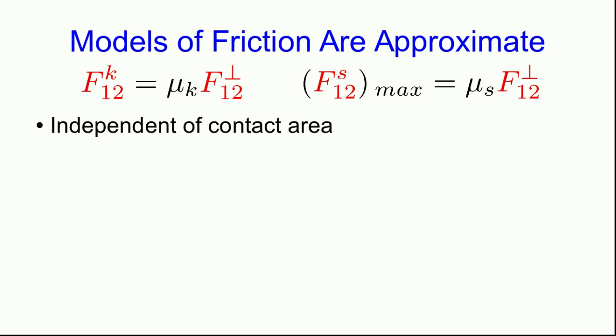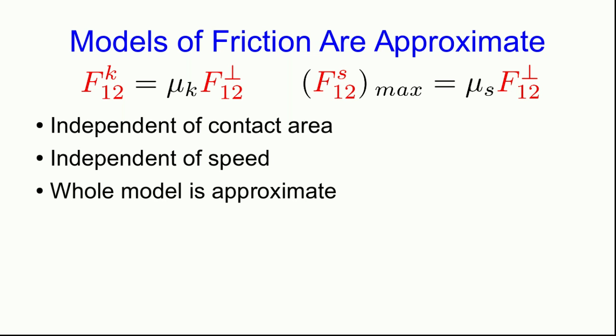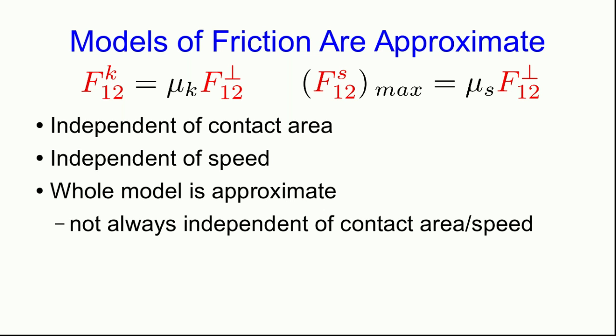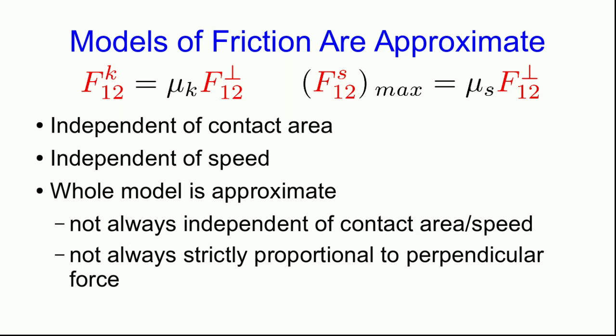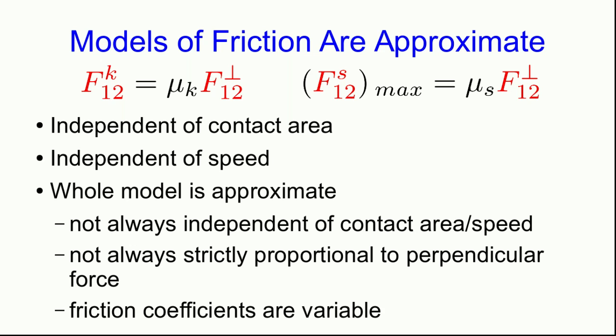One reason I'm not putting more emphasis on this topic is that these friction models are approximate. The model says kinetic friction is proportional to the perpendicular force with a kinetic friction coefficient, and maximum static friction has a similar formula with a static friction coefficient — both independent of contact area and, somewhat counterintuitively, also independent of speed. But this whole model only holds approximately some of the time. Sometimes friction does depend on contact area or relative speed, isn't strictly proportional to the perpendicular force, and the friction coefficients vary with temperature and other factors.